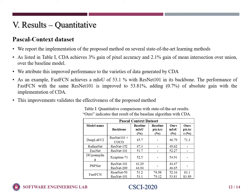We further report quantitative results on the PASCAL context dataset. We implement cascade data augmentation using several recent semantic segmentation methods. For example, as seen in Table 1, fast FCN with ResNet-101 backbone achieves a mean intersection over union accuracy of 53.1% without CDA. However, by implementing CDA with the same default settings, the performance of the network improves to 53.81%, which is almost a 0.7% gain over the baseline network.